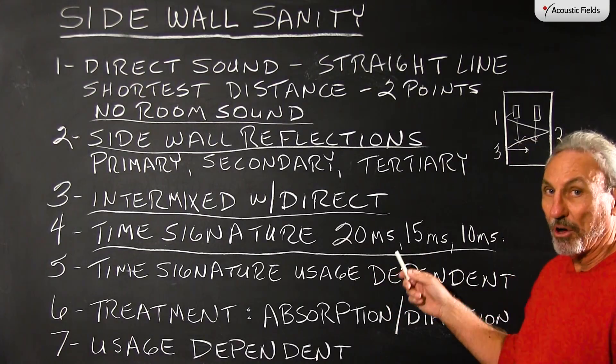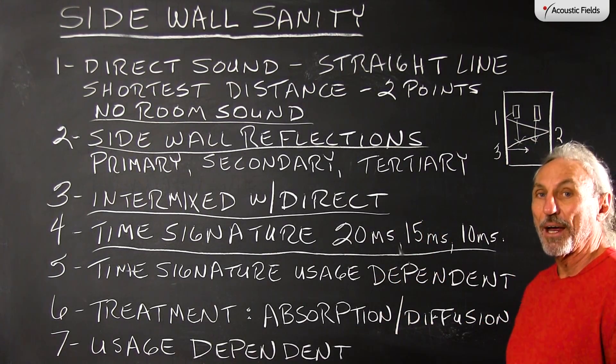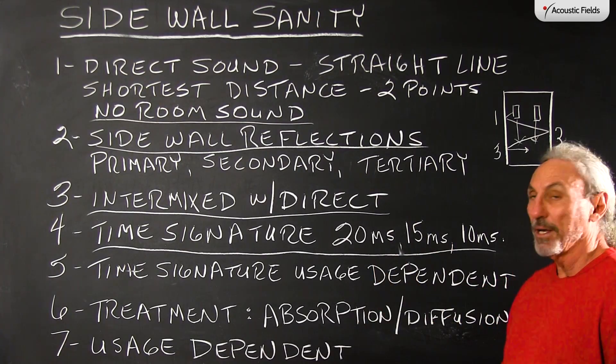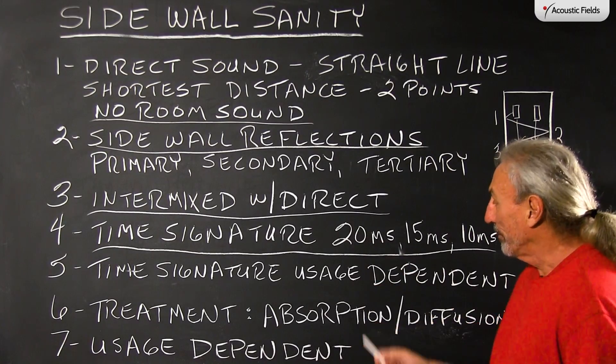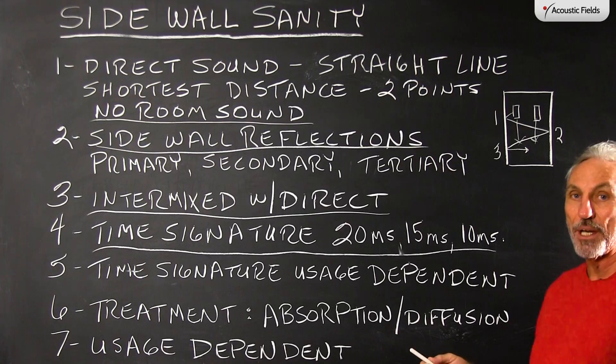Now there's a lot of talk in the literature, there's a lot of discussion amongst people about what the exact time signature should be below the direct of the reflected energy. Some of the literature will say 20 milliseconds, some will say 15, some will say 10.